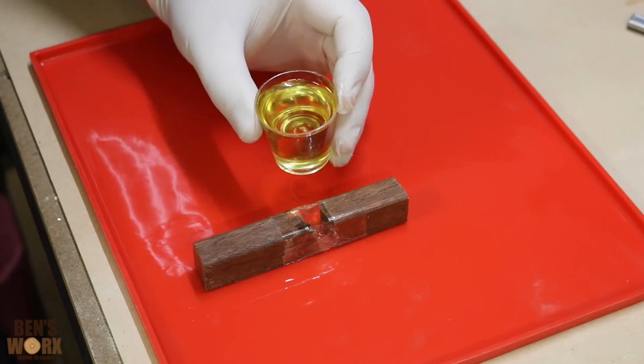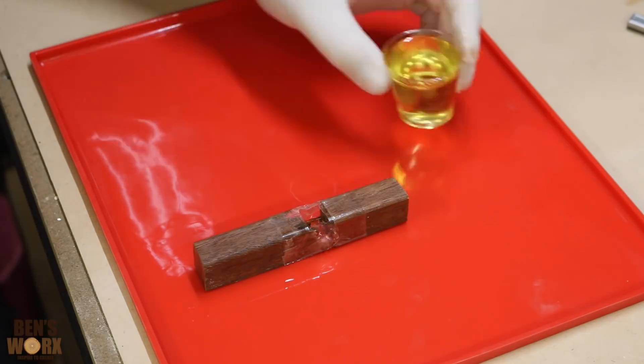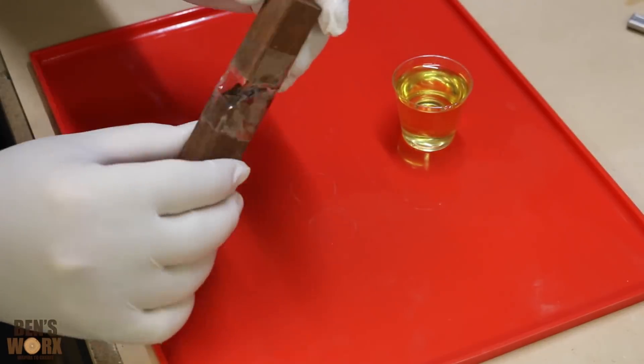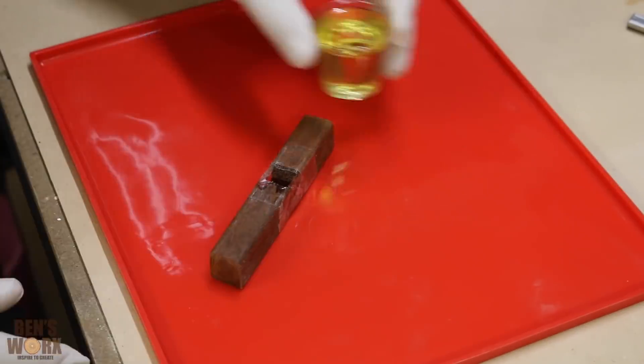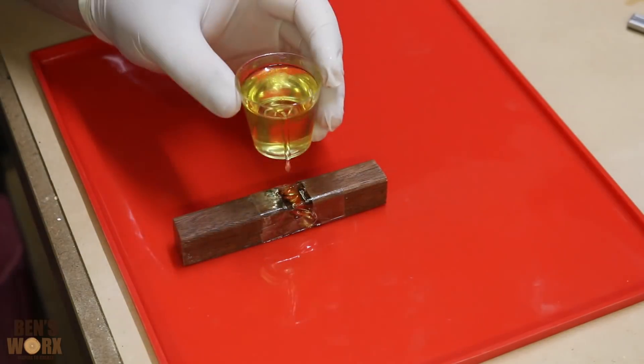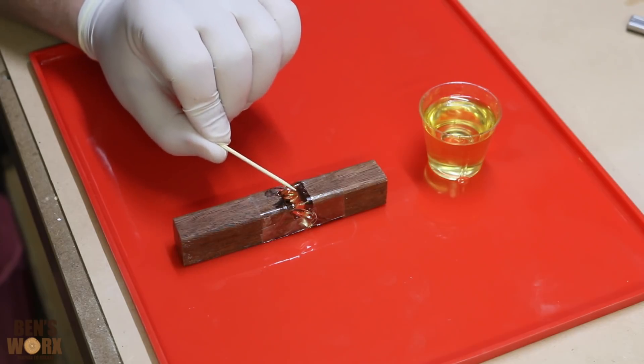So I'm just going to start off by pouring in a little bit first and then trying to get it around all the cracks. If you do see any air bubbles, just grab yourself a toothpick and just try and work them out.